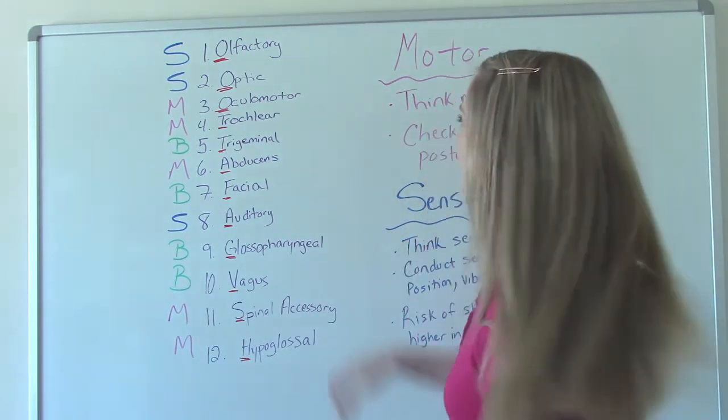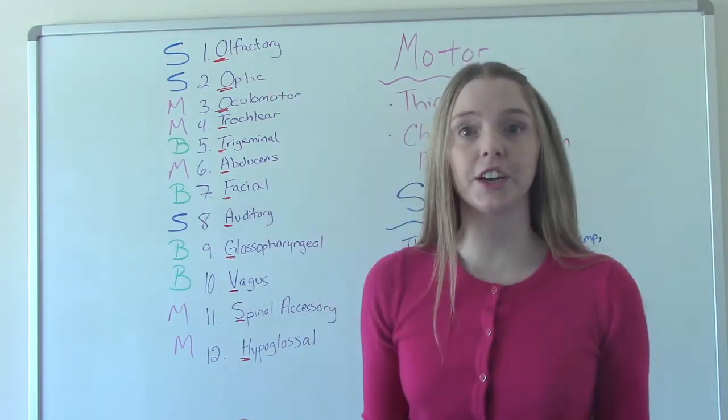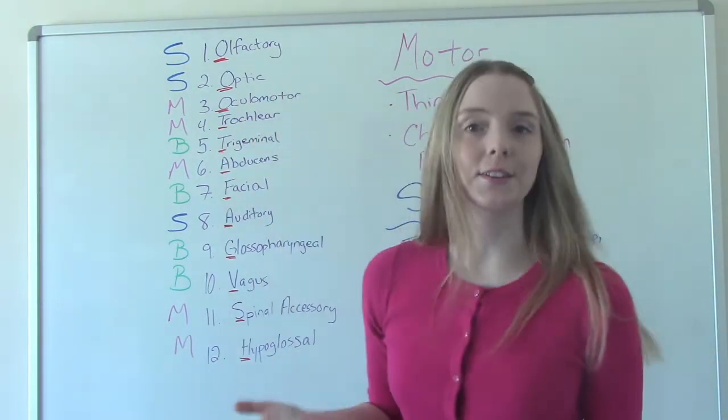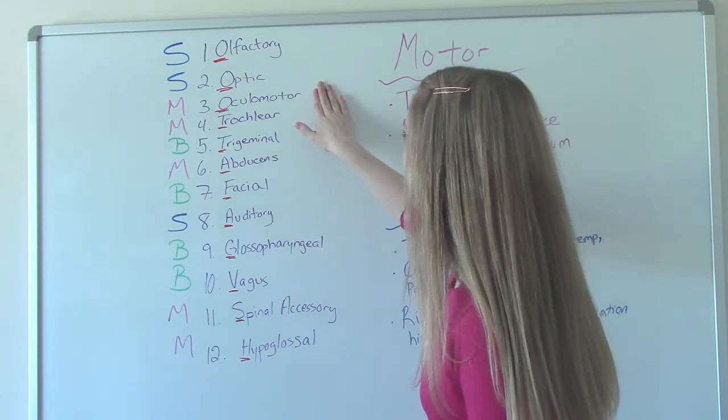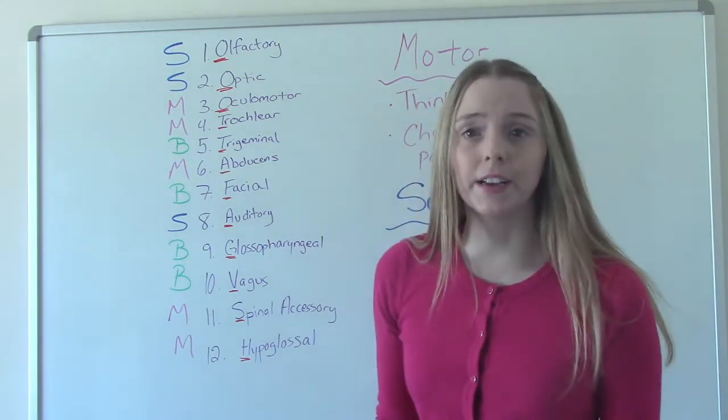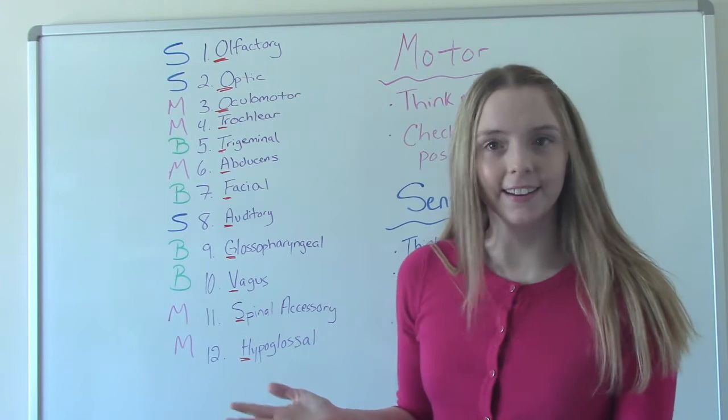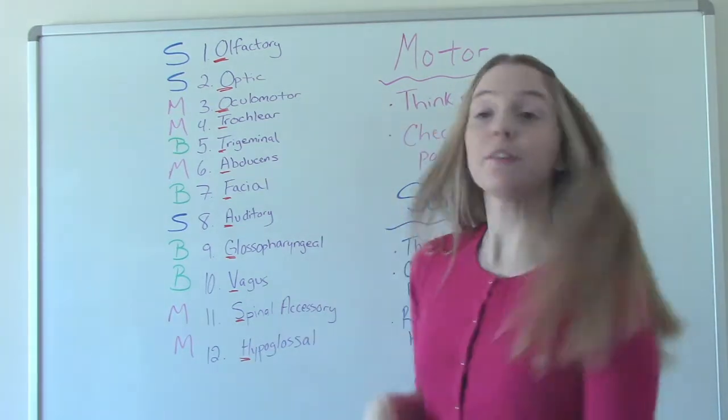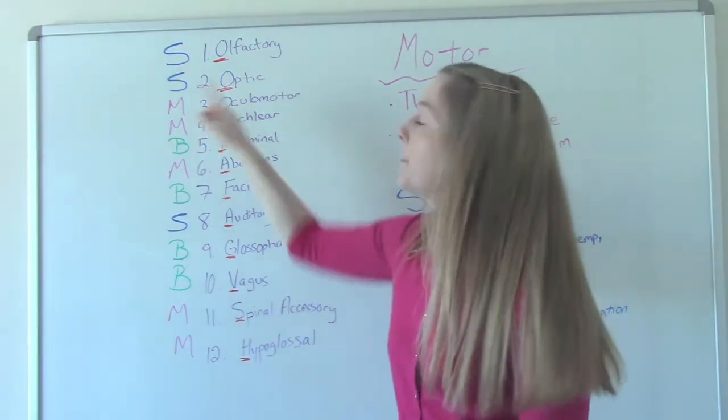Two, our sense of vision, our ability to see. Sensory. Three, oculomotor. This one's super easy because it has the word motor right in it, right? But it's our eye movement, right? So motor movement.